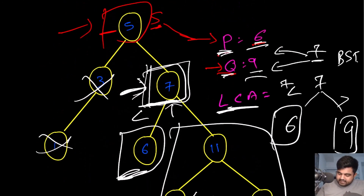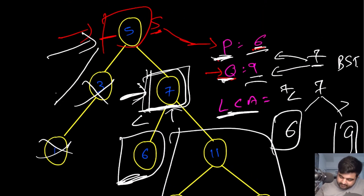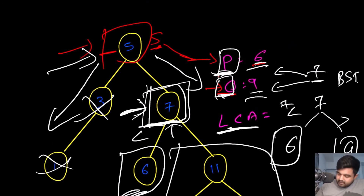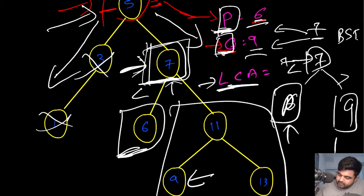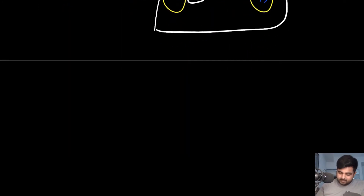So the approach is: we iterate over the tree and compare the current root value with P and Q. Based on that comparison we decide whether to go left or right. The moment we find a match between the current node and either P or Q, we return that value as the lowest common ancestor. If we reach a point where P falls on the left side and Q falls on the right side of the current node, we immediately return that node. This is the optimal approach to solve this problem.